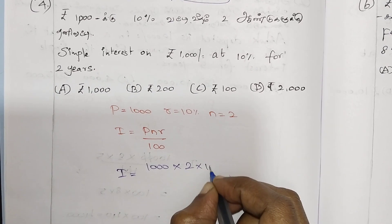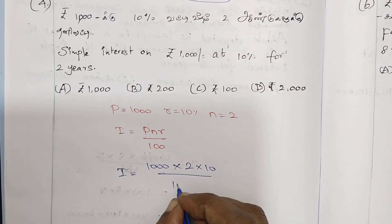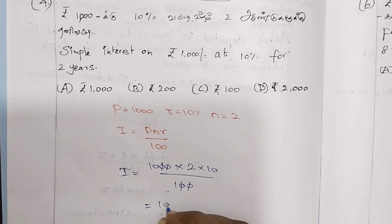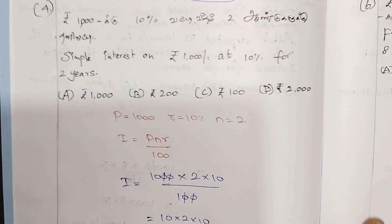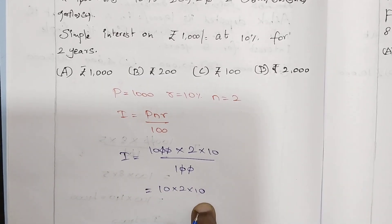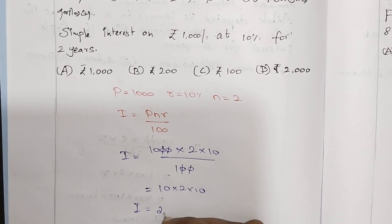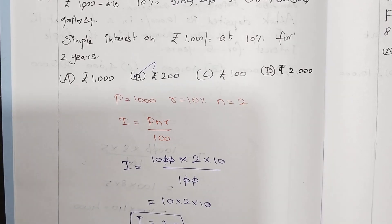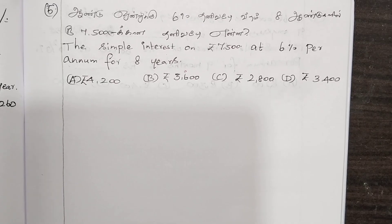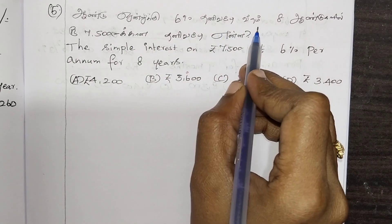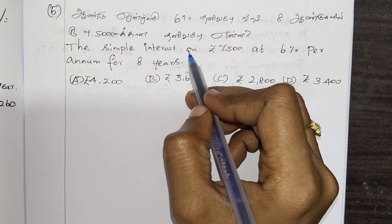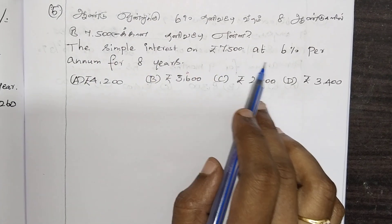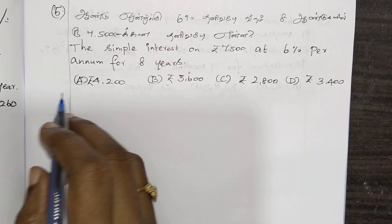Simple interest is 1,000. Then 30 into 10 gives 300. 5 into 10 into 10 equals 100. 30 into 10 is 100. The result is 200.